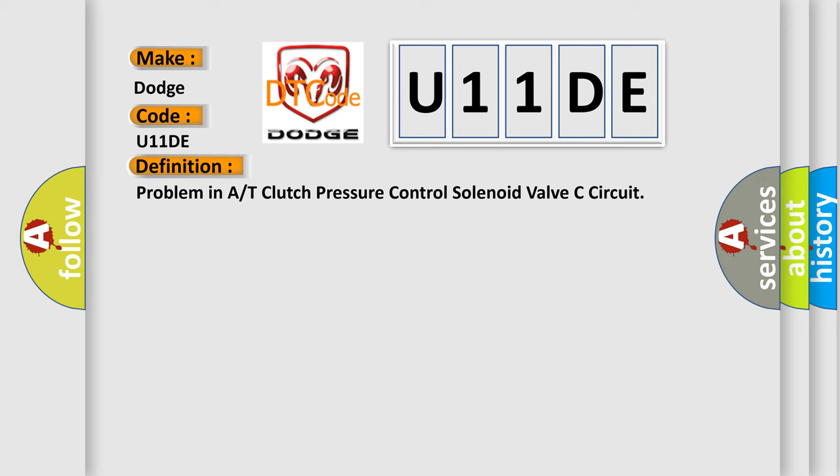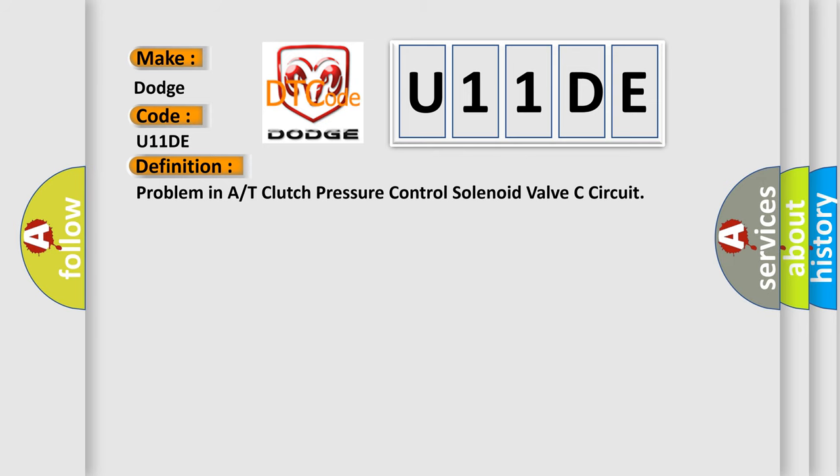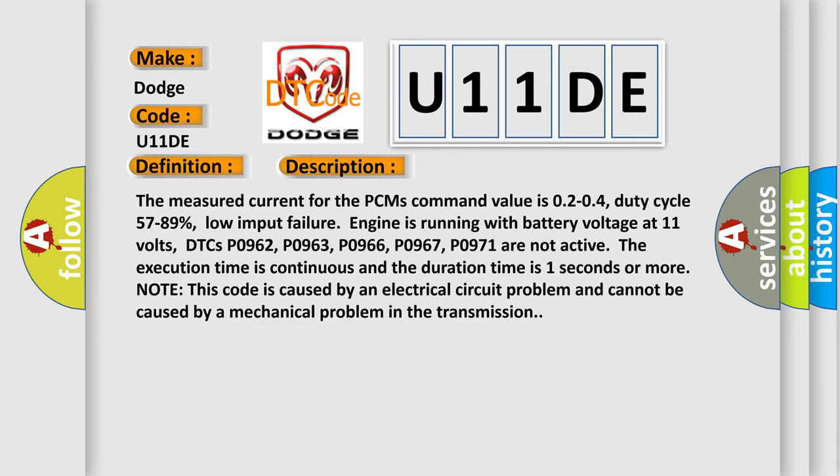The basic definition is: Problem in A/T Clutch Pressure Control Solenoid Valve C Circuit. The measured current for the PCM's command value is 0204, duty cycle 57–89%, low input failure, engine is running with battery voltage at 11 volts. DTCs P0962, P0963, P0966, P0967, and P0971 are not active. If the execution time is continuous and the duration time is 1 second or more. Note: this code is caused by an electrical circuit problem and cannot be caused by a mechanical problem in the transmission.